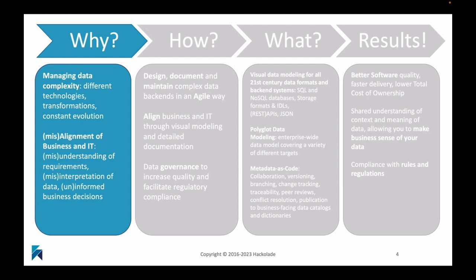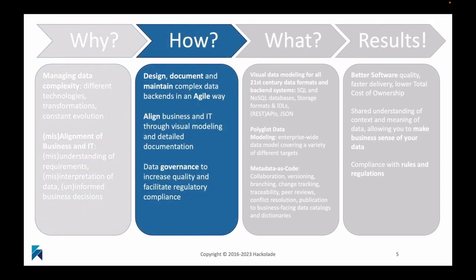We want to try to manage that complexity because the misalignment between business and IT has so many costs and implications that could really harm the decision-making processes in large organizations. That's our highest level objective. The way we are going to try and do that is design, document and maintain complex data backends in an agile way. We love agile development processes and support the agile manifesto. But we understand there are some implications to the traditional way of working with data, and we need to adjust not just our processes and way of working, but also our tooling. Visual modeling and detailed documentation are going to be really important parts of the solution.